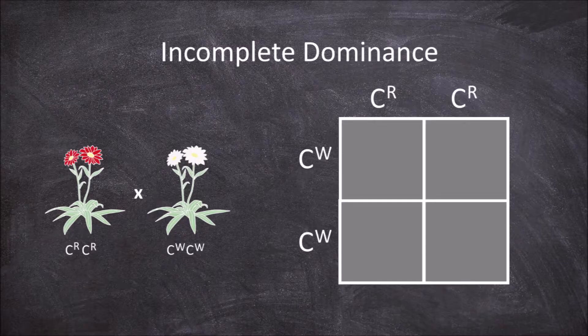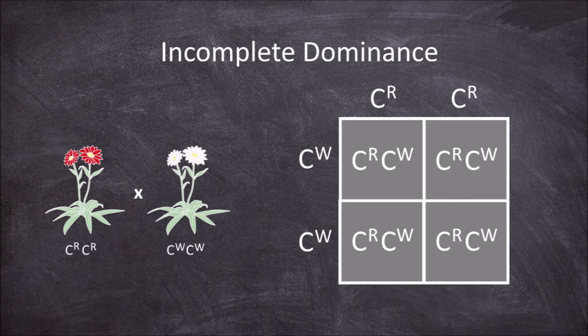To fill the Punnett square, we combine the allele from one parent from the top with one allele from the other parent along the side, keeping the C^R alleles first. This gives us the potential offspring that this cross can produce.